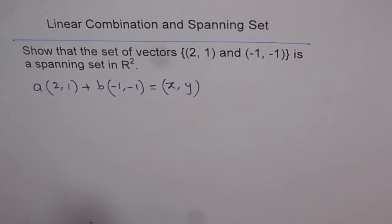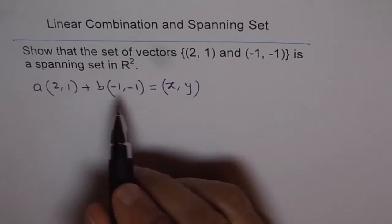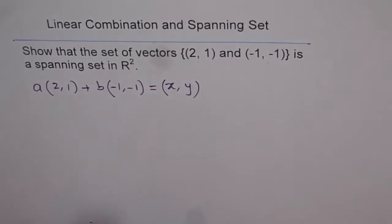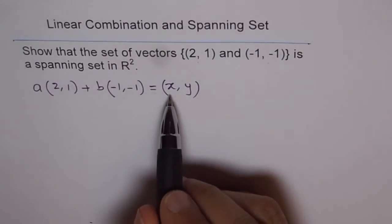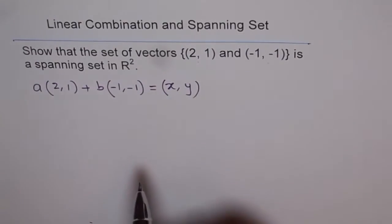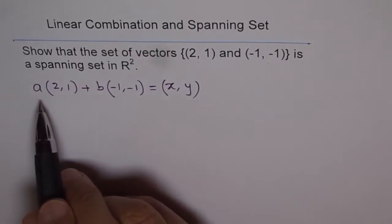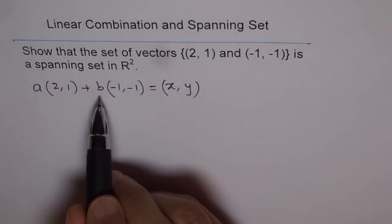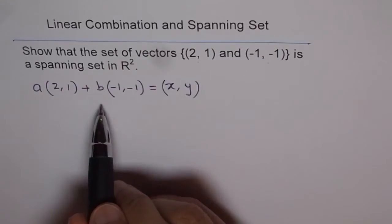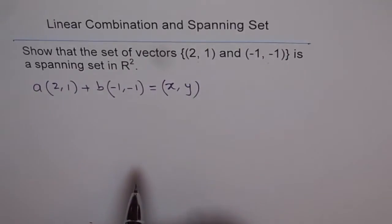So when we say any vector, we should imagine this to be a position vector. When we write these numbers, these are all position vectors. So let's take a general position vector (x, y) and see if we can find a value of a and b which can give us the vector (x, y).